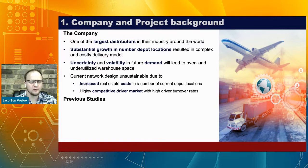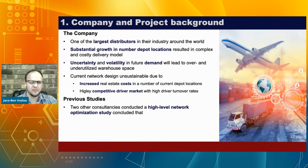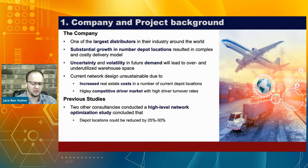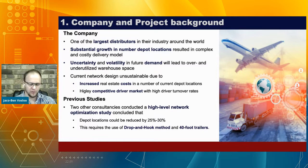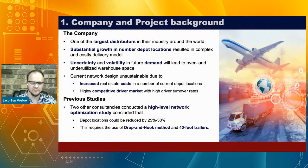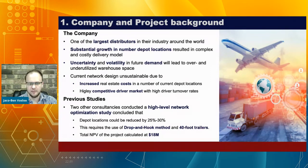Before we got involved, two previous studies by other consultant companies concluded that depot locations could be reduced by 25 to 30 percent, but this required a drop-and-hook method and larger 40-foot trailers. For those unfamiliar, a drop-and-hook method means you don't deliver directly to final customers — you take your truck and trailer, drop the trailer at a drop-and-hook lot, collect empty trailers, and other contractors handle final-mile delivery to customers. The net present value of that project was calculated at about $18 million.